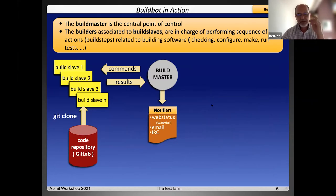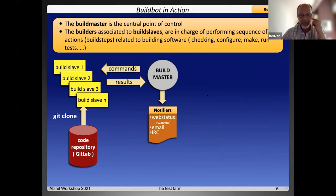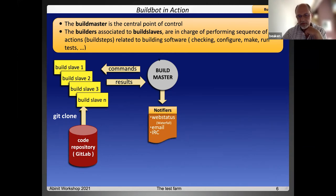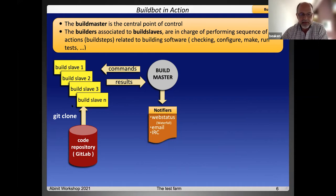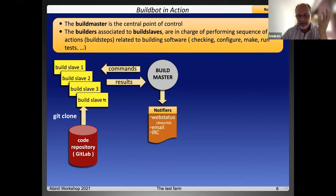For the automation part, we chose Buildbot, a powerful Python framework. It mainly consists of a build master, build slaves, and builders. The build master is the central point of control and shares a configuration. It makes all decisions about what, when, and how to build. The builders are associated to a build slave and are in charge of performing a sequence of actions related to building software, like checkout, configure, make, run tests, and so on.